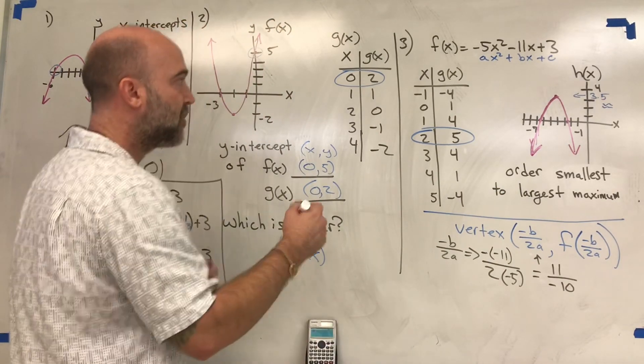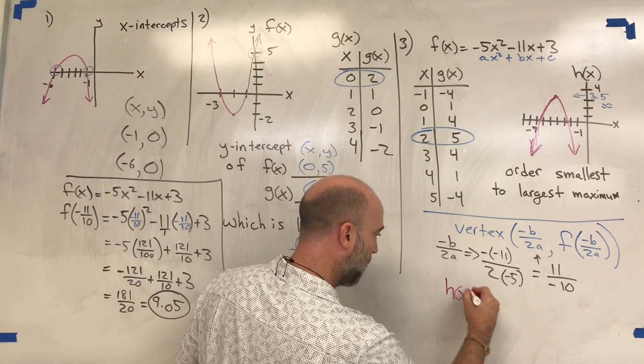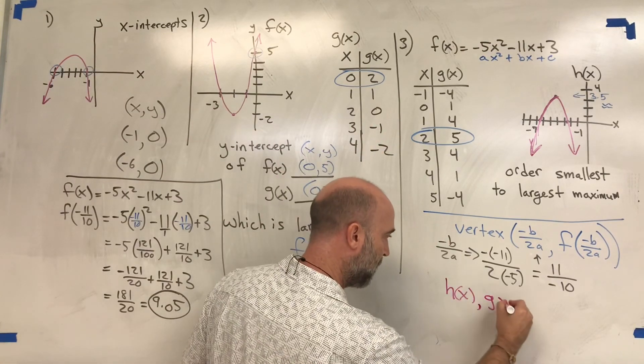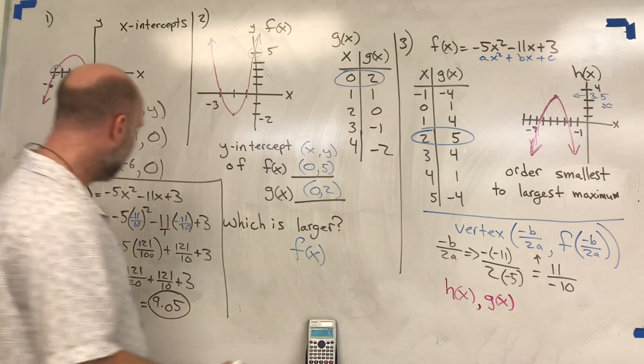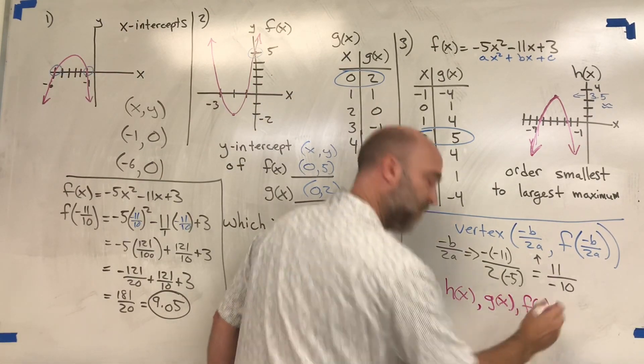So the smallest one is h(x), the next largest is g(x), and then the largest is f(x). Thank you.